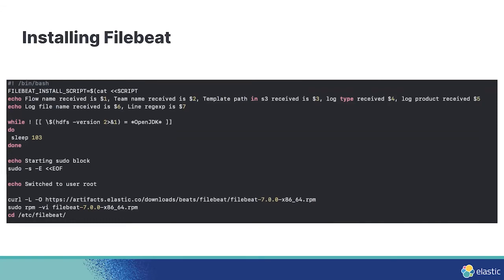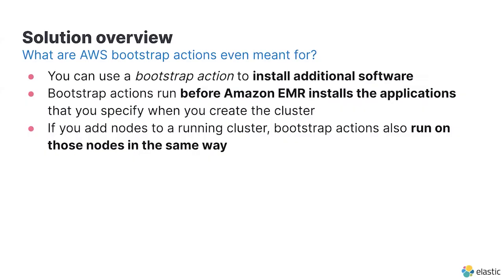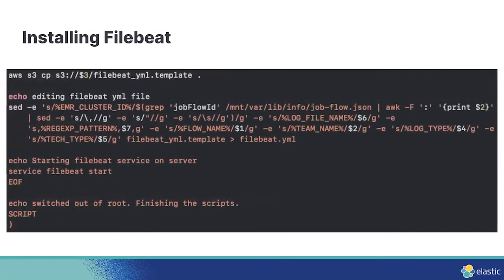After receiving the configuration variables, the next thing we do is wait for Java to be installed on the server. Amazon runs bootstrap actions before they install their own software on the EC2 servers, so we need Java available before we can install FileBeat and MetricBeat. Once that's done, we download the RPM file off of Elastic, open it up, install it, and configure FileBeat using the configuration variables we received. We created a template FileBeat YAML and edit it using sed and the configuration variables, so the output is a FileBeat YAML our FileBeat can use.